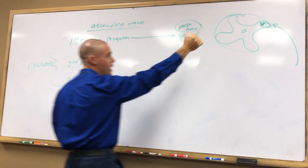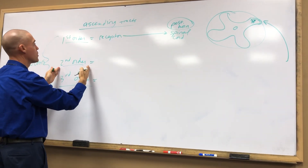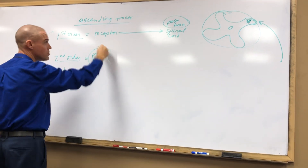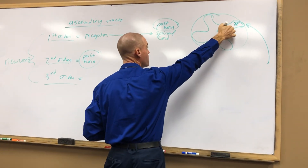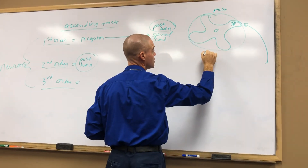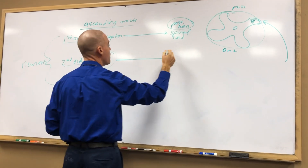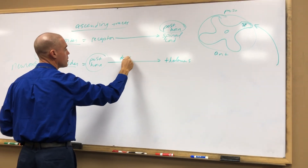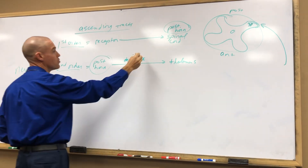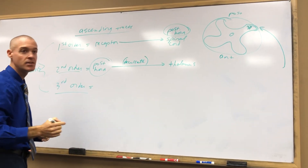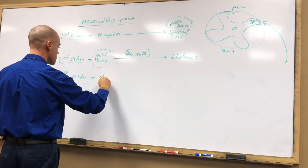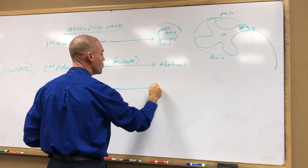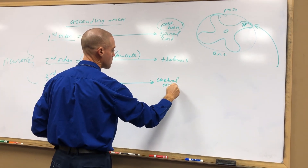That's a synapse point, then the second order neuron takes over. It's going to go from the posterior horn — which is inside the spinal cord — to another area called the thalamus, which is an area inside the brain. This particular neuron is going to decussate as well, which means it's going to cross to the other side.